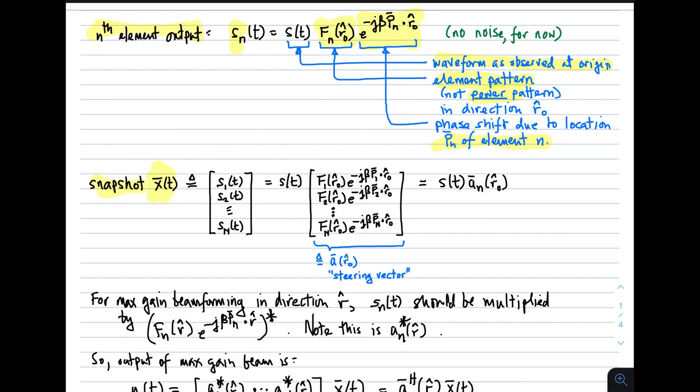The snapshot we would like to identify with a single quantity, the vector x. The vector x is an n by one vector where we simply line up those element outputs, the snapshot. S(t) is in common to all the element outputs in the snapshot, so we can factor that out, leaving this vector which depends only on the element positions and their patterns. We refer to this as a steering vector, specifically a steering vector for the direction r hat sub nought. The snapshot can be expressed as the waveform times the steering vector corresponding to the direction of arrival.